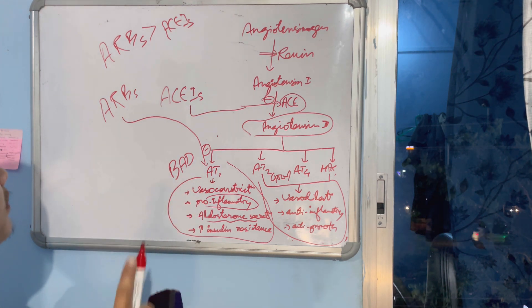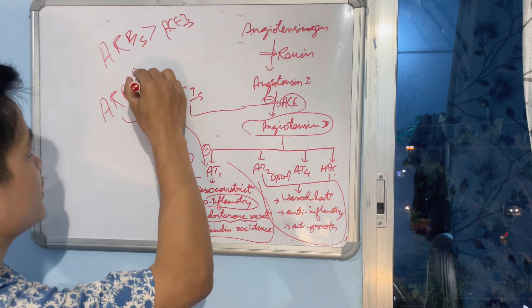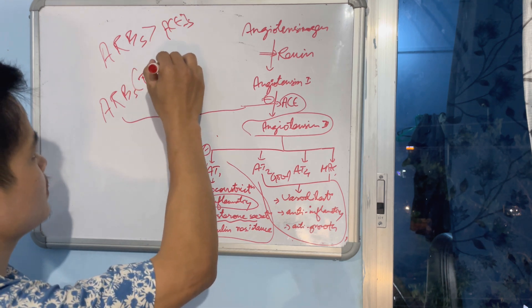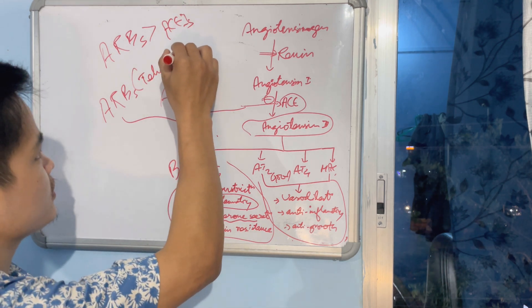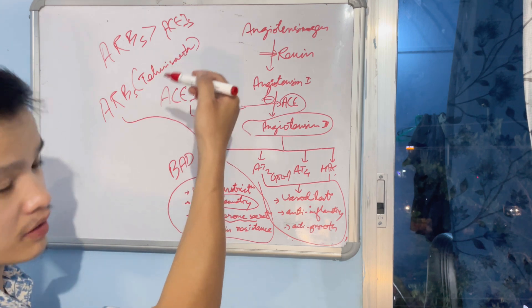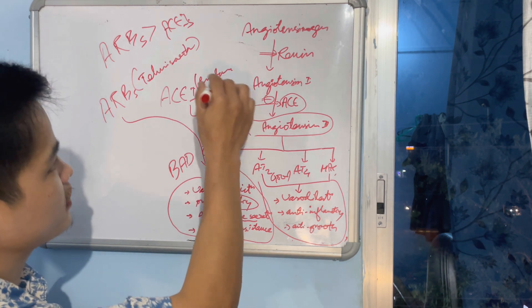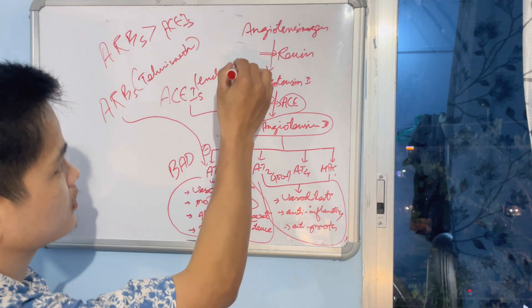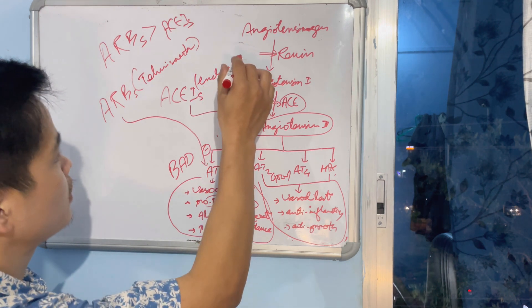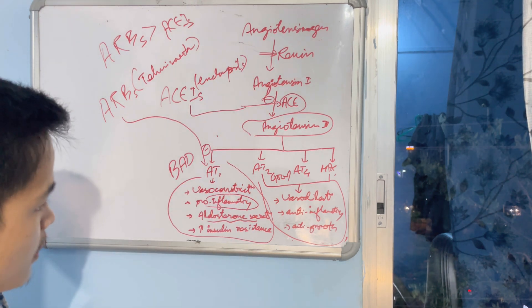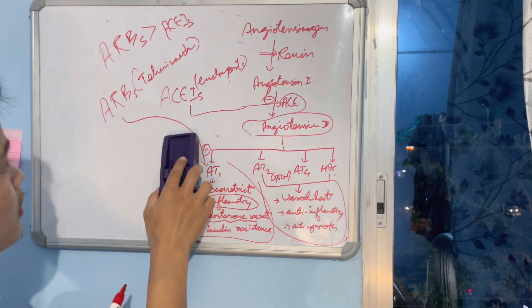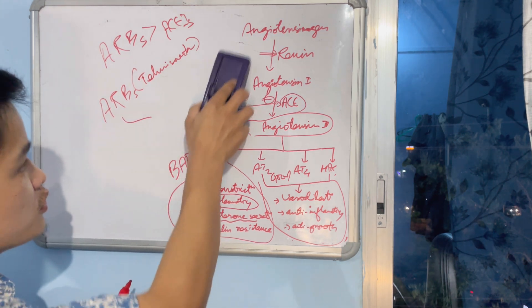An example of these drugs are like sartan - losartan, valsartan, telmisartan - these are the sartan drugs. And these are like pril drugs - enalapril, captopril, ramipril - these are the pril drugs. These are ACE inhibitors.